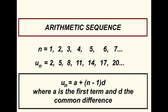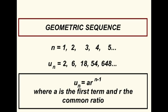In an arithmetic sequence, a constant common difference is added to each term to get the next one. In a geometric sequence, each term is multiplied by a constant common ratio in order to get the next term.